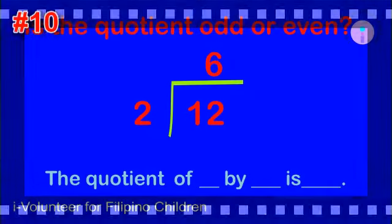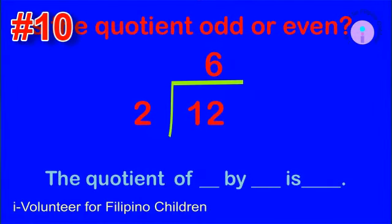Item number ten: is the quotient odd or even? The quotient of twelve by two is odd.